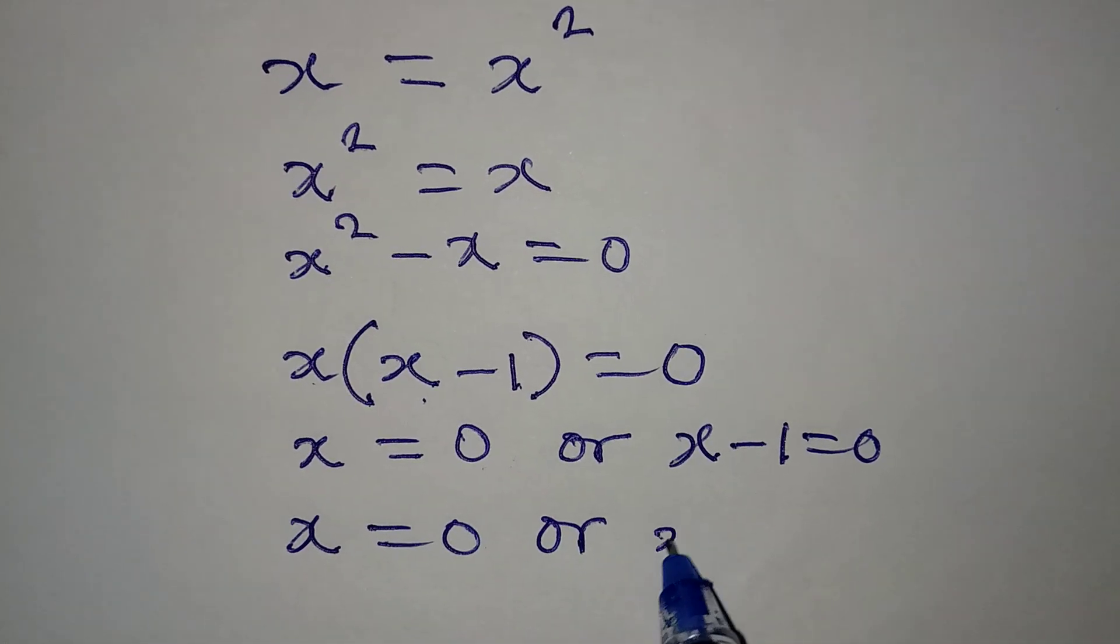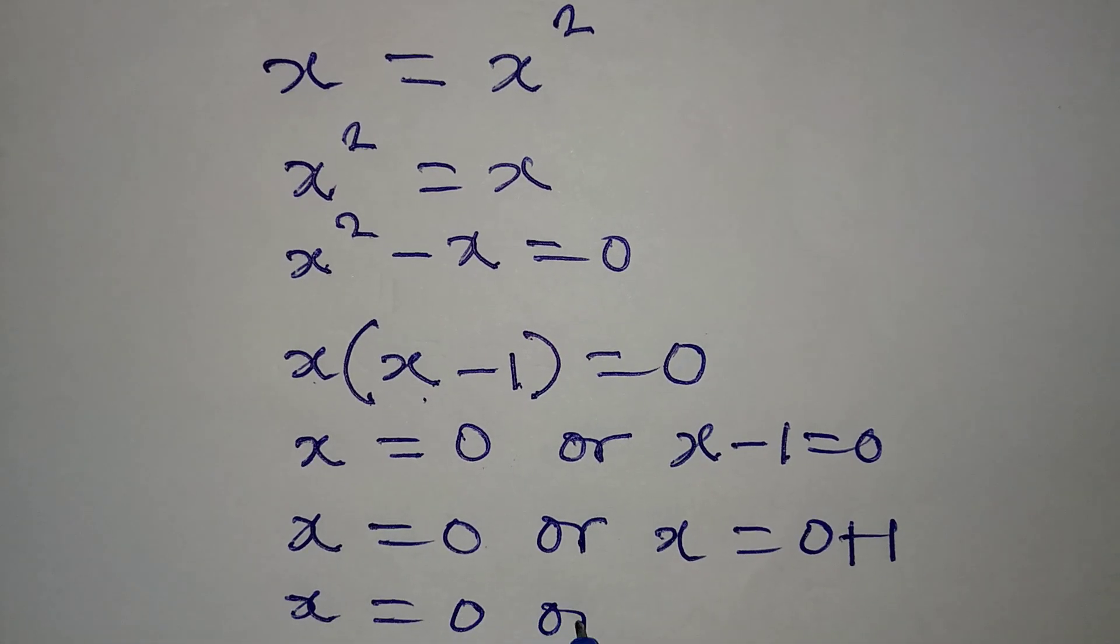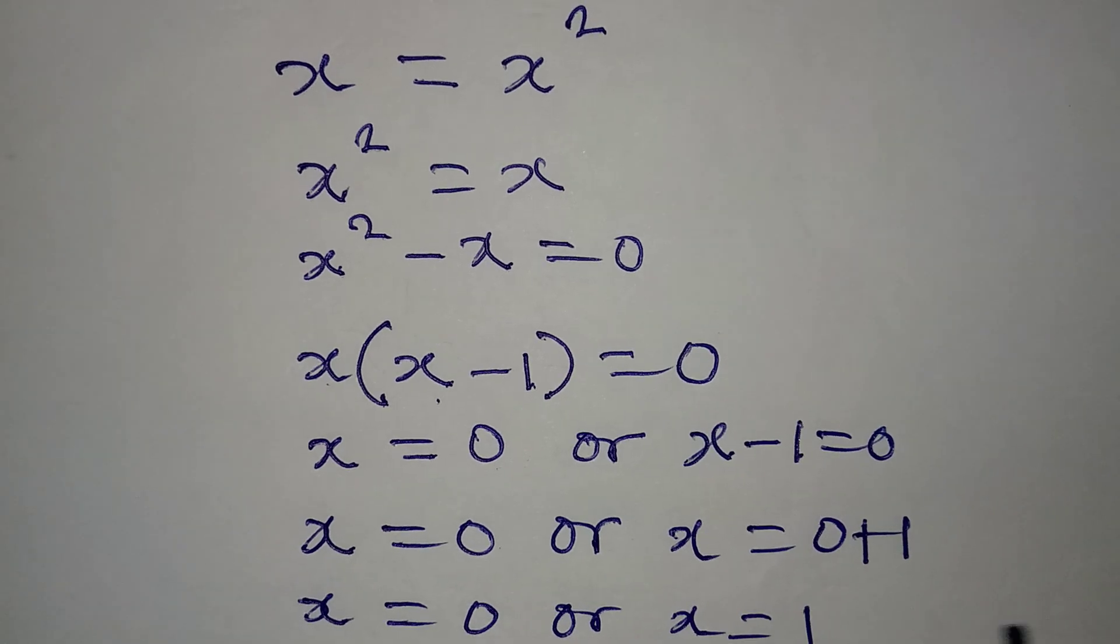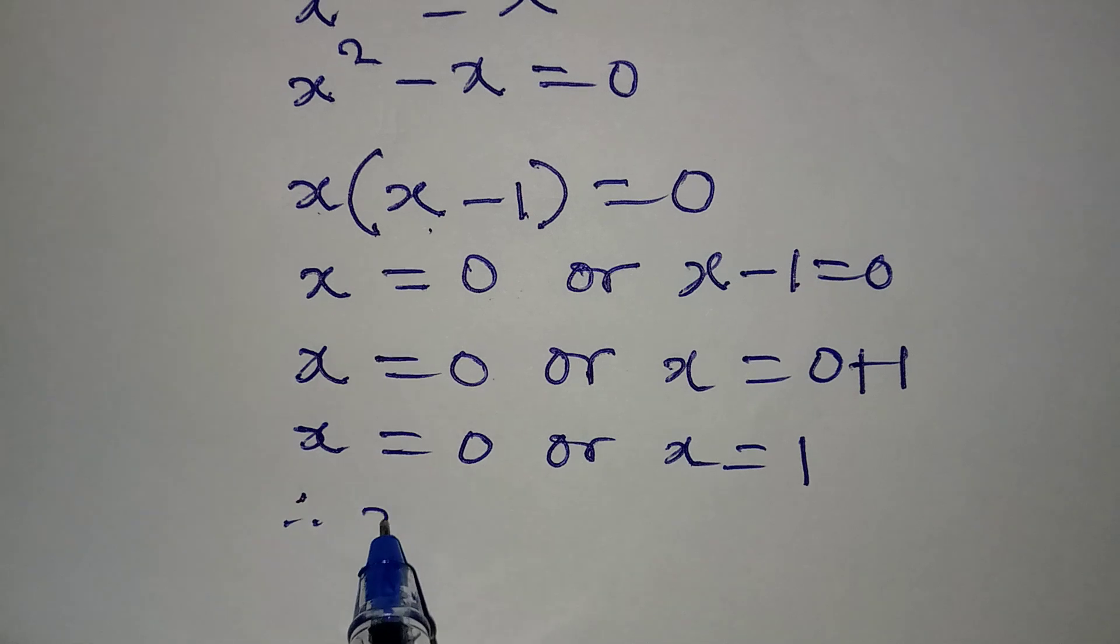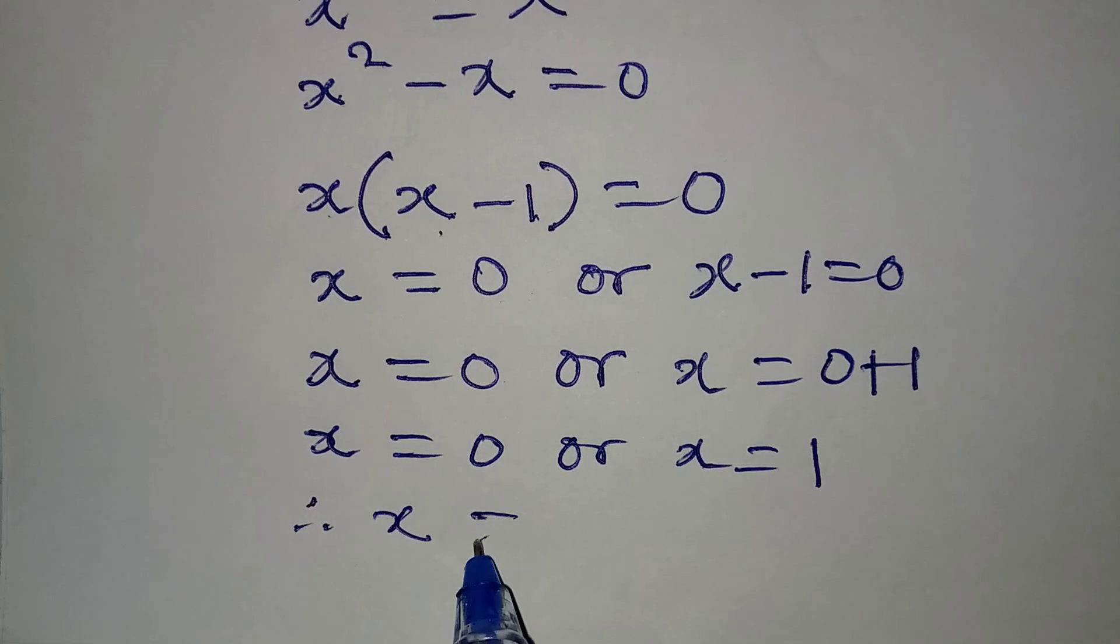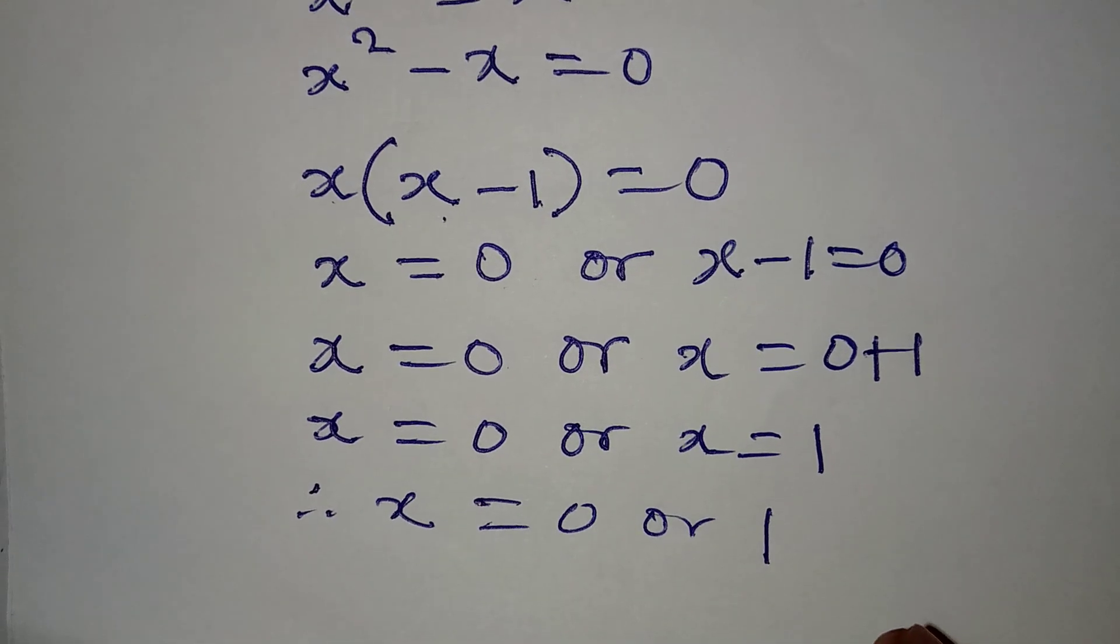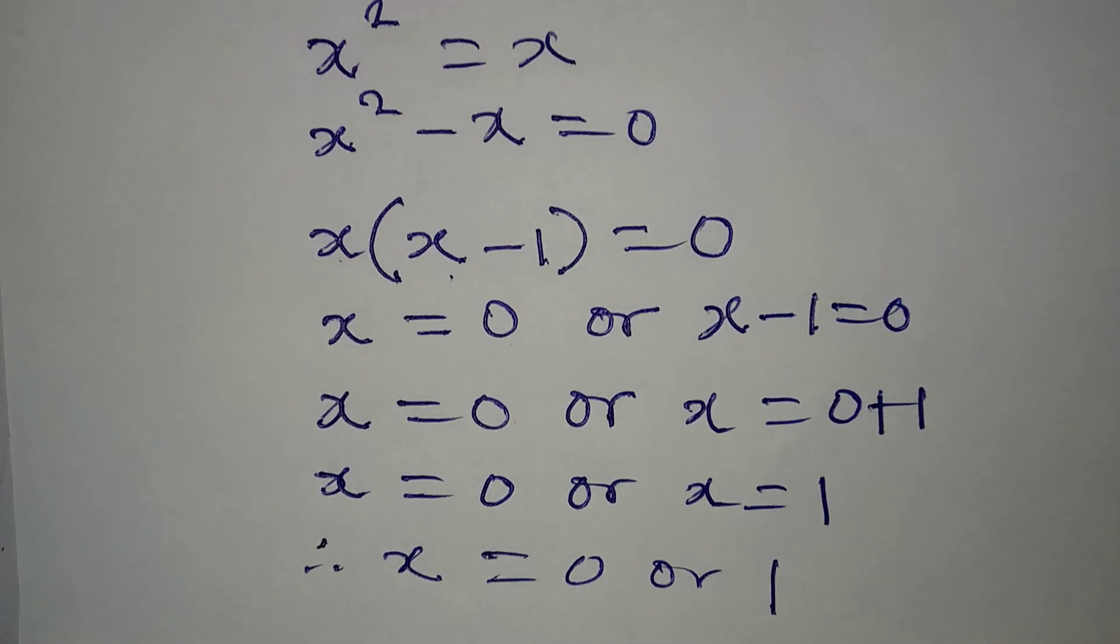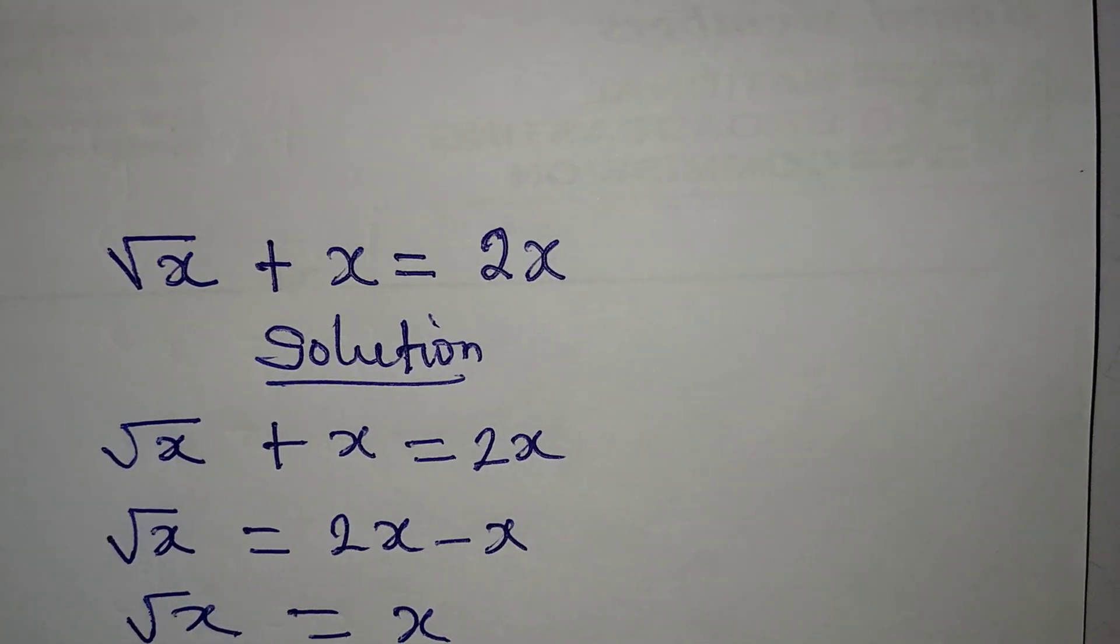Or x to be equal to zero plus one. X is equal to zero or x is equal to one. Right, now bringing the two solutions together, we have x to be equal to zero or one. And if you put this value of x into the original equation, will it satisfy the equation? Let's take a look.